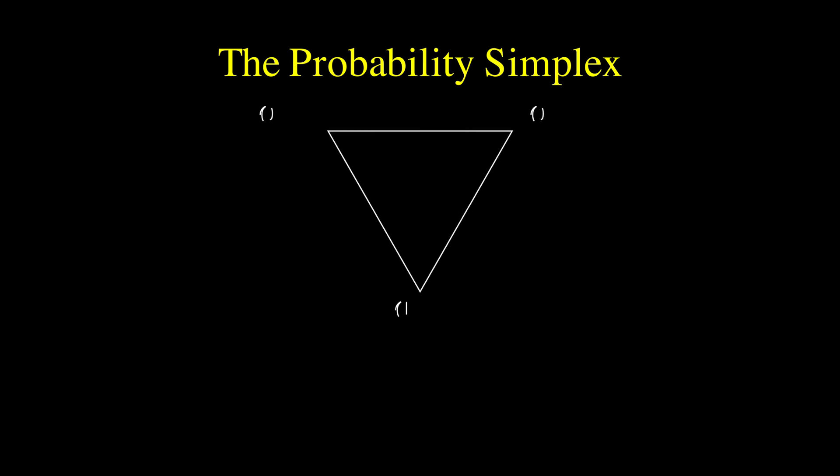The visual representation of the Dirichlet distribution is particularly beautiful when you have three categories. We can visualize it on a triangular simplex, where each point in the triangle represents a possible probability vector. The three vertices of the triangle represent the extreme cases where one category has probability 1 and the others have probability 0. When you sample from a Dirichlet distribution, you're essentially picking points from this triangle, and the distribution tells you which regions of the triangle are more likely.